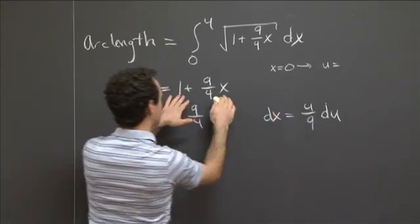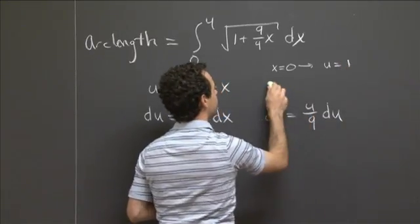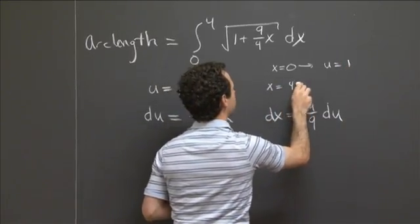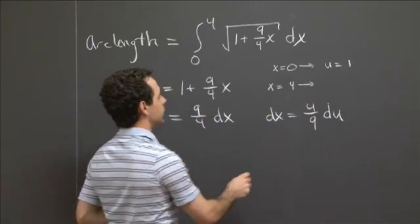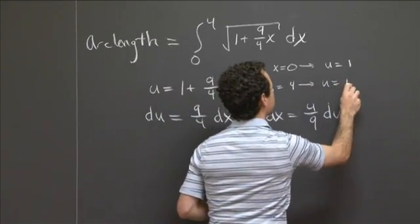So when x equals 0, that goes to u. I put in 0 here, u is equal to 1. When x is equal to 4, so I put 4 in here. That goes to u equals 10.